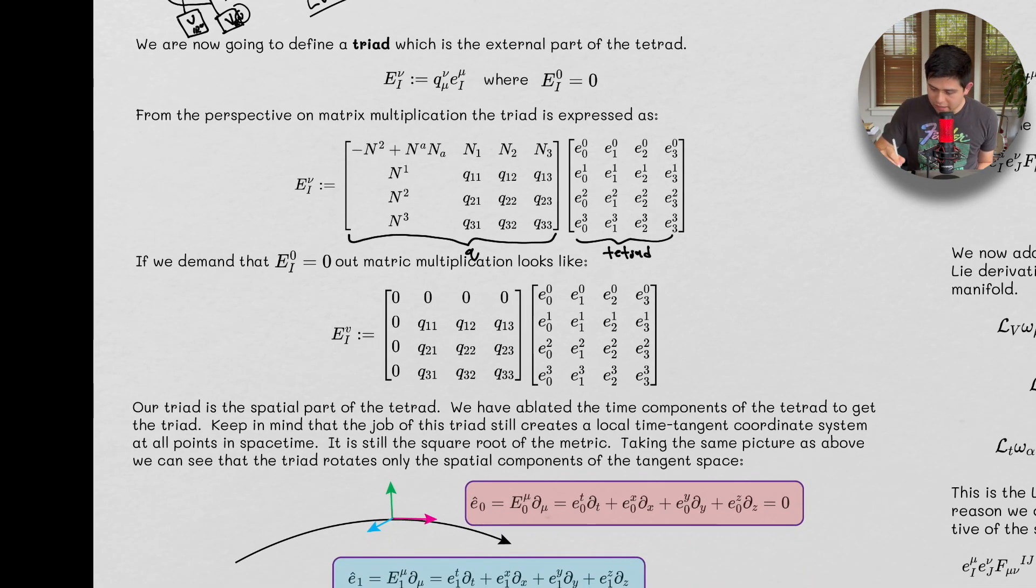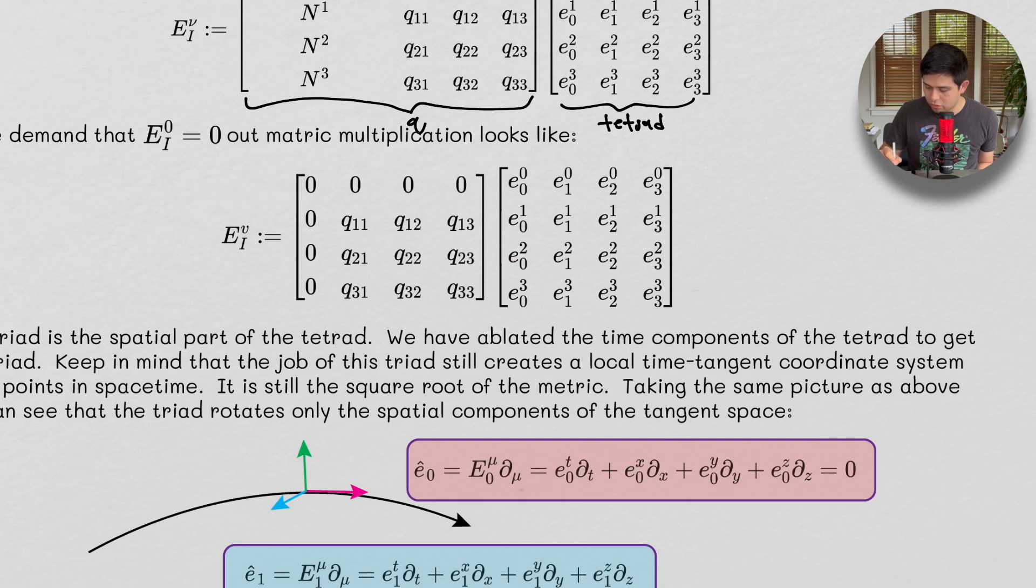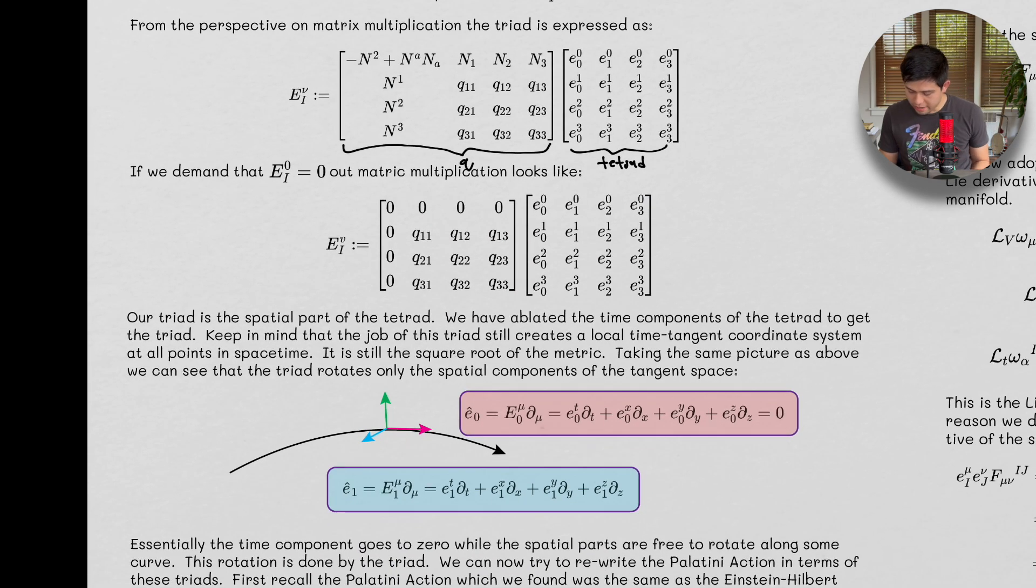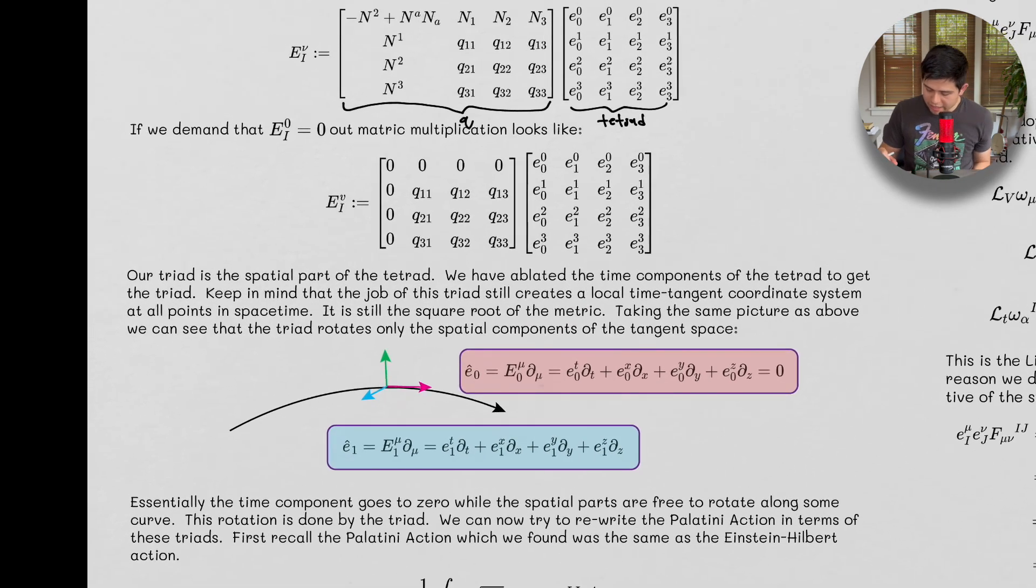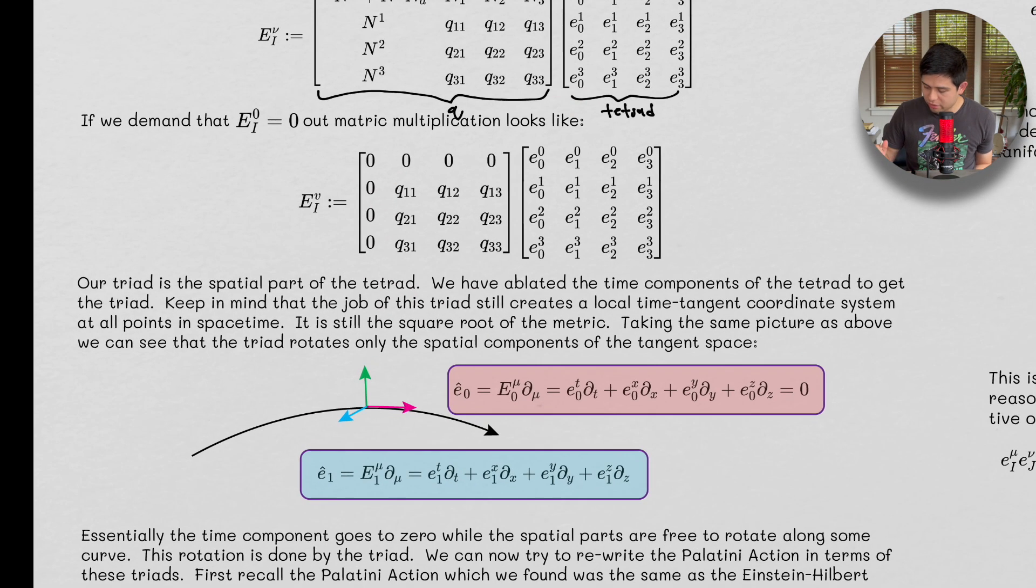So if we demand that E_I^0, or this here is zero, our matrix multiplication looks like this. So all of the temporal stuff just vanishes. And we just have the spatial stuff all multiplied by this. And so what we have, so our triad is the spatial part of the tetrad. Because all we have going on now is just spatial stuff, no temporal stuff.